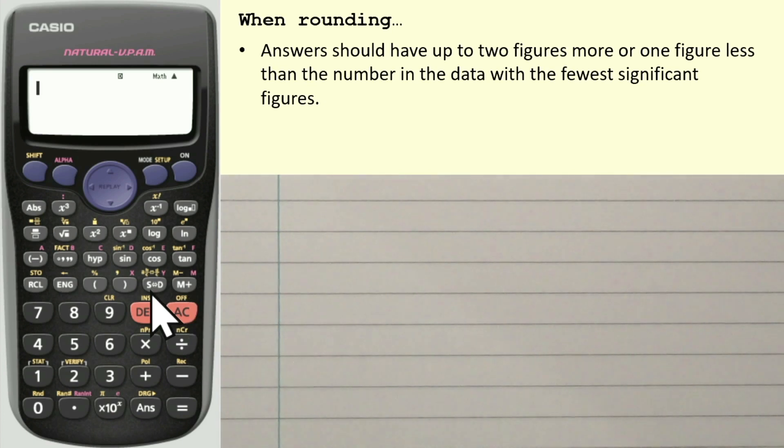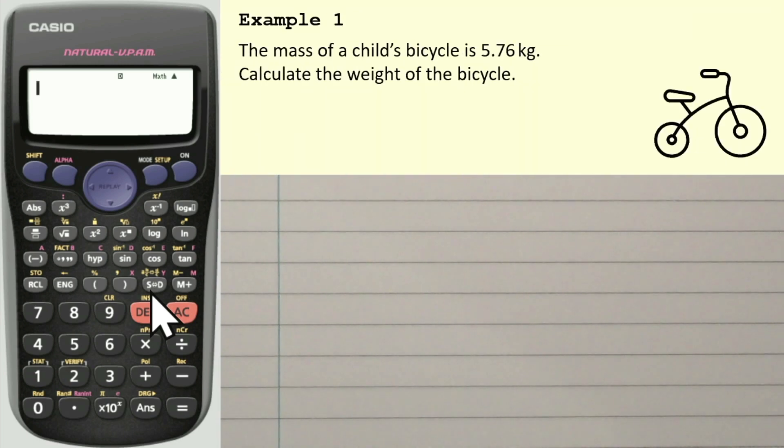Maybe what I should do is show you an example. So here's the first example here. Now don't worry if you don't know the equation that's used for this. Really what we're interested in is understanding how to actually round the final answer. That's all that's important. So the question says, the mass of a child's bicycle is 5.76 kilograms. Calculate the weight of the bicycle.